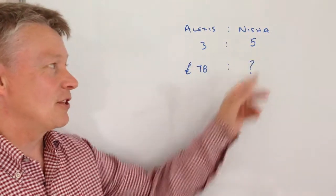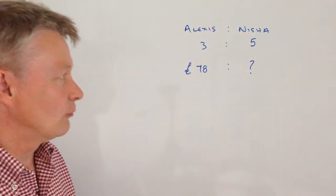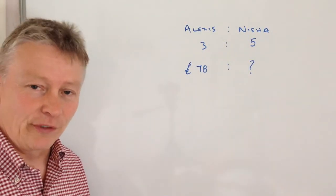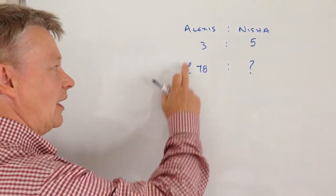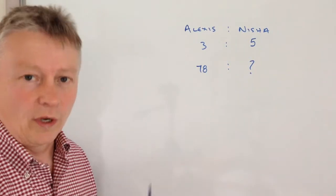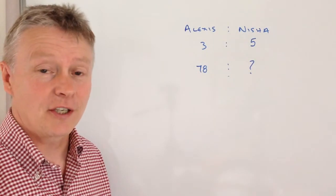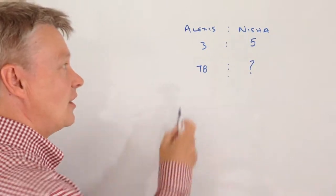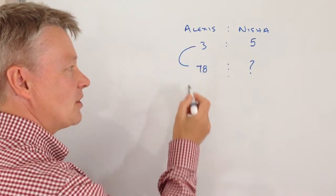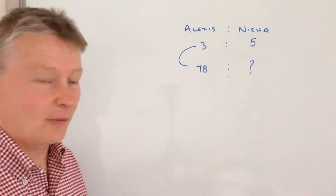And the question is, how much does Nisha pay? Okay, well really these are a little bit like dealing with fractions. Essentially, whatever you do to one side of the ratio, providing you do the same to the other side of the ratio, then you'll get the correct answer. So we've got 3 times something equals 78. Well actually, that's going to be 26.